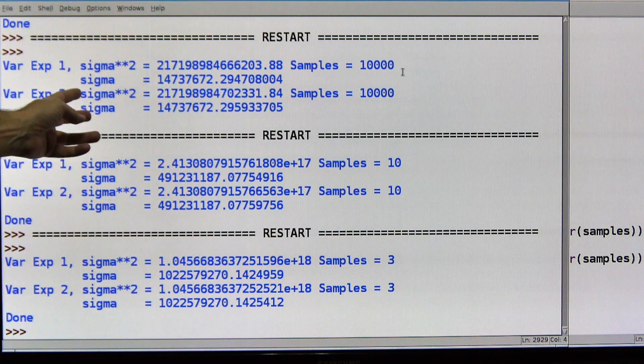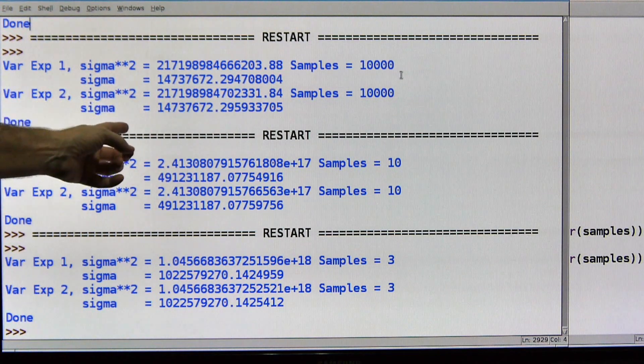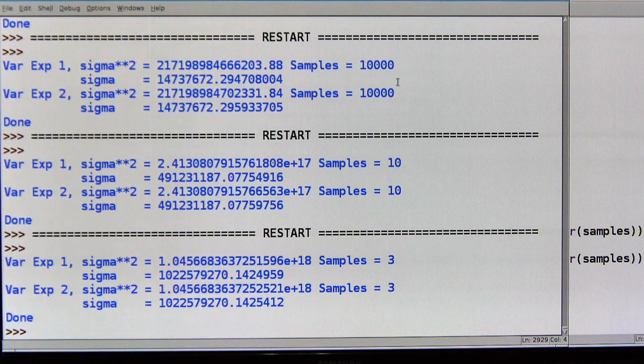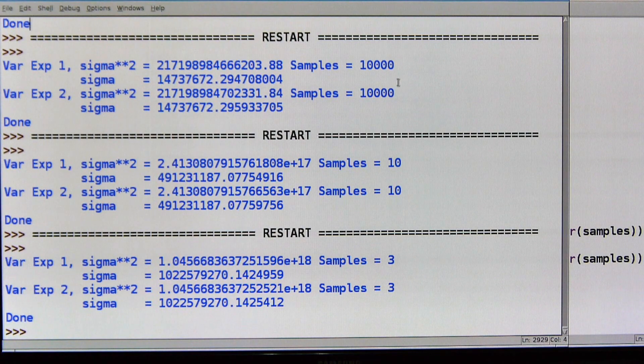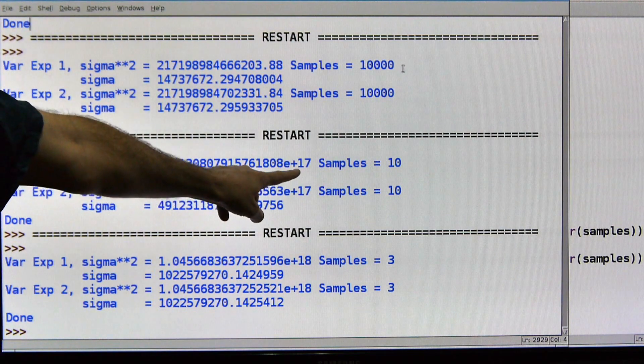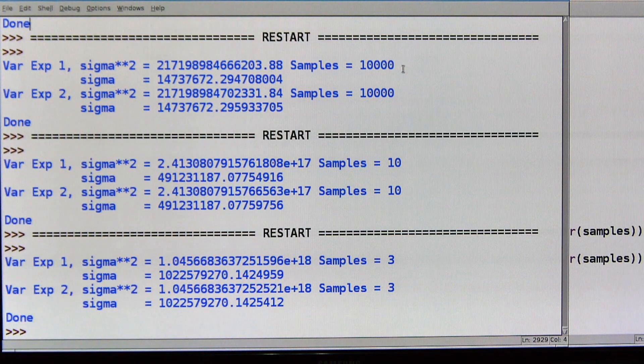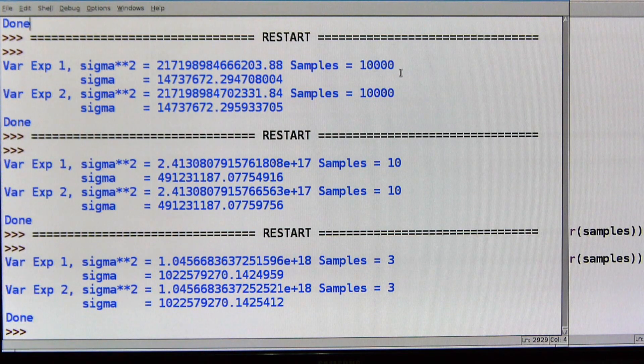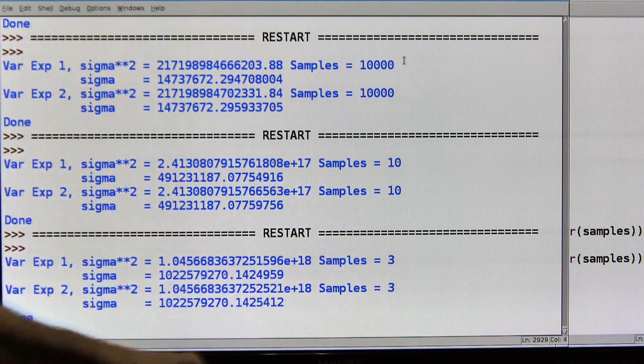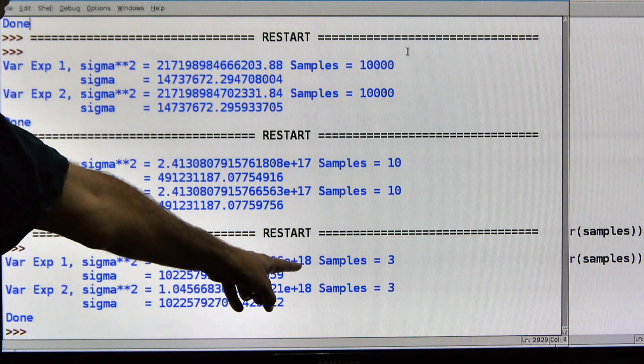Down here, experiment two, where we turned pin seven on, detected it with pin 11, and then turned it back off, well, we've got, again, a huge variance. And the bad news is that as the sample size gets smaller, like 10, this jumps to a huge number. This is, this number followed by 17 zeros, that's, that is huge. And then down here, we have three samples, which is what we were doing with the acceleration test. And I mean, it's up by a factor of 10.